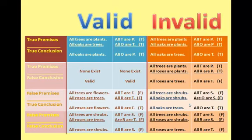Let me show you a counterexample. In the very first premise, all T are P, I can substitute T for cats and P for animals. In the second premise, all O are P, I can substitute O for dogs. Now the conclusion reads: all dogs are cats. Clearly, that is false. And that is a substitution instance in an invalid structure that proves invalidity. This is called the counterexample method.